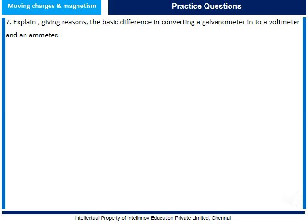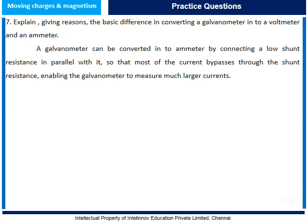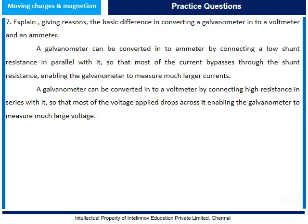Question 7: Explain the basic difference in converting a galvanometer into a voltmeter and an ammeter. A galvanometer can be converted into an ammeter by connecting a low shunt resistance in parallel with it, so that most of the current bypasses through the shunt resistance, enabling the galvanometer to measure much larger currents. A galvanometer can be converted into a voltmeter by connecting a high resistance in series with it, so that most of the voltage applied drops across it, enabling the galvanometer to measure much larger voltages. Thank you.